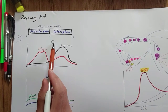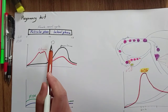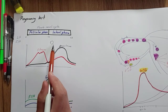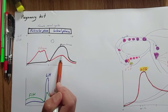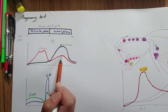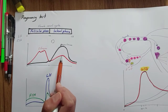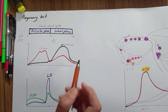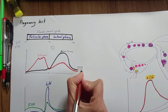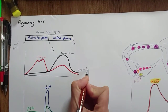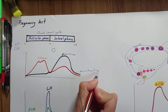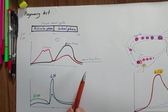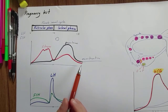If the ovum is not fertilized, the corpus luteum in the ovaries starts involution, and the progesterone and estrogen secreted from the corpus luteum decrease at the end of the luteal phase, so menstruation begins. There is shedding of the endometrium if there is no pregnancy.